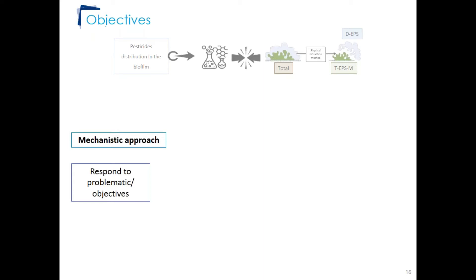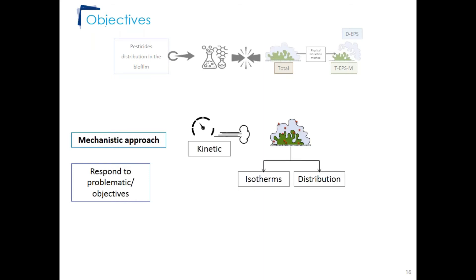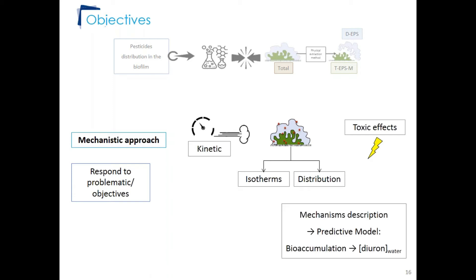Different extraction methods exist, such as cation exchange resin, but this type of resin can interact with pesticides and present a competition phenomenon between the biofilm and the resin. That is why a physical extraction method was developed to separate the DEPS fraction from the TEPSM fraction. A mechanistic approach was used to characterize diuron kinetics and distribution in the biofilm and its isotherm, while in parallel the toxic effects of this pesticide were also assessed.